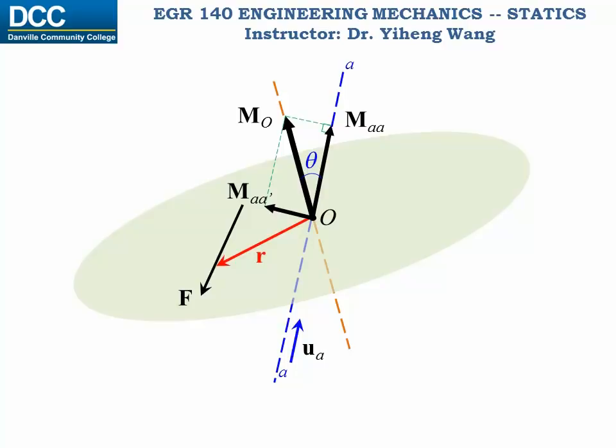If we know the angle theta between vector MO and the AA axis, we can determine MAA to be MO times cosine theta. Notice that this is very similar to finding the projection of a force along a specified axis.